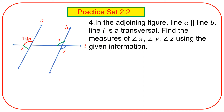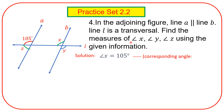Which information is given? This angle is given as one hundred and five degrees. This angle and angle X are corresponding angles, since line A is parallel to line B and line L is the transversal. Therefore, angle X is equal to one hundred and five degrees. Reason: corresponding angles.